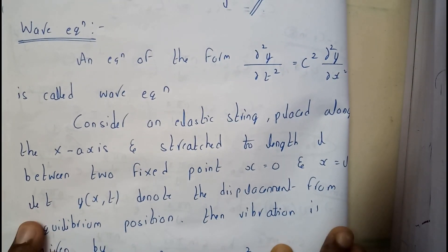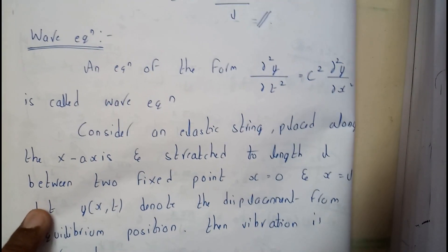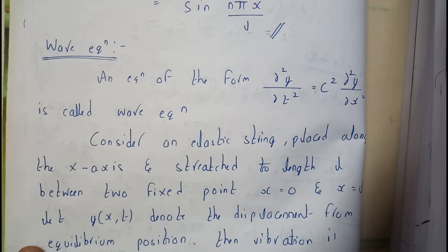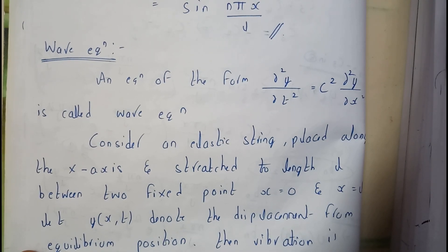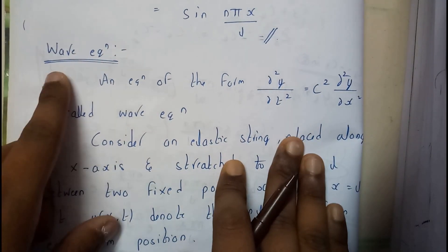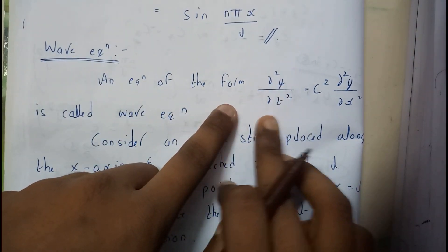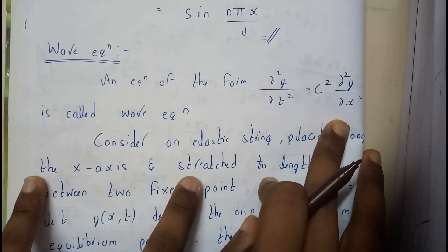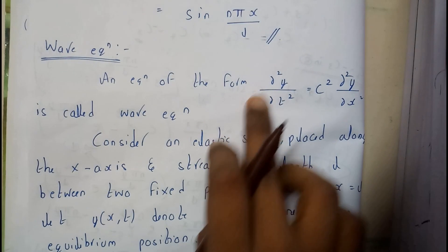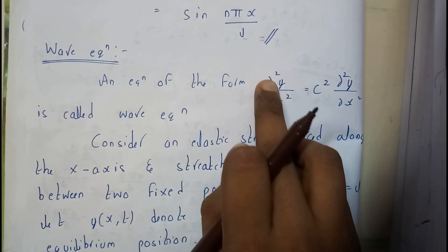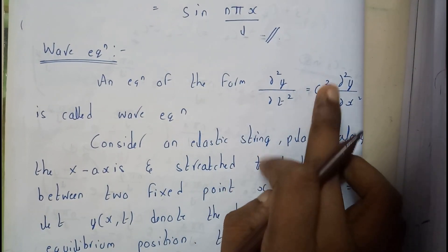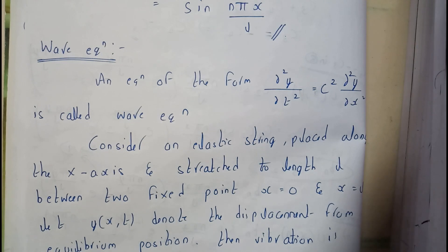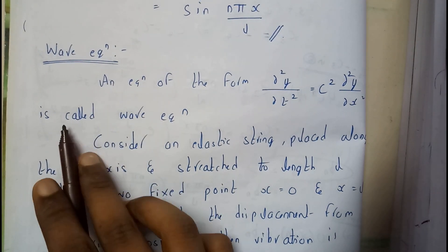Hello guys, we are back with our next tutorial. In this tutorial let's go through the wave equation — the one-dimensional wave equation. We'll be going through the theorem now and I'll be uploading the problem later. Basically, the wave equation is of the form ∂²y/∂t² = c² · ∂²y/∂x². You can also write this as ∂²u/∂t² = c² · ∂²u/∂x². Either notation is correct — this is called the wave equation.